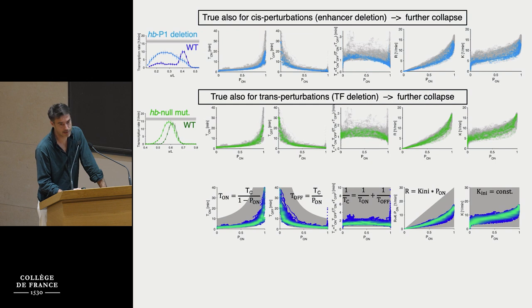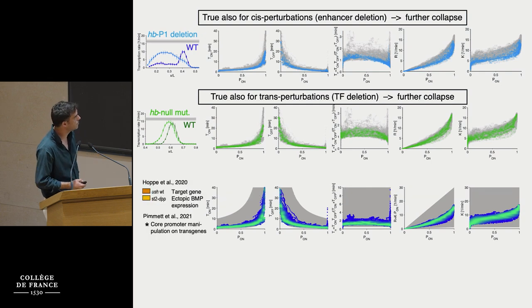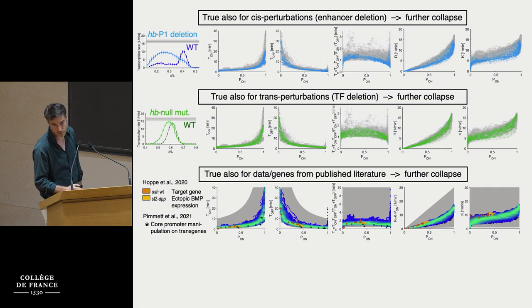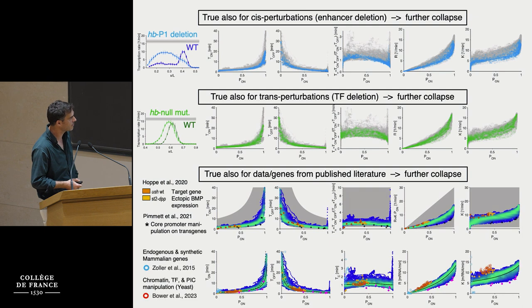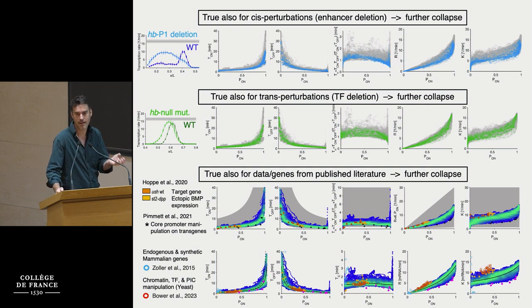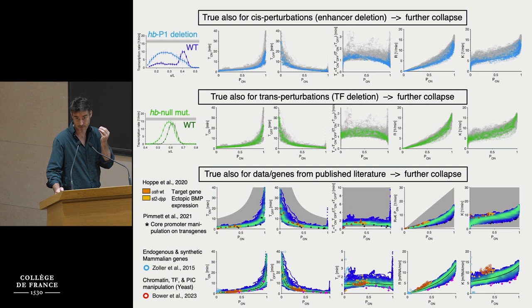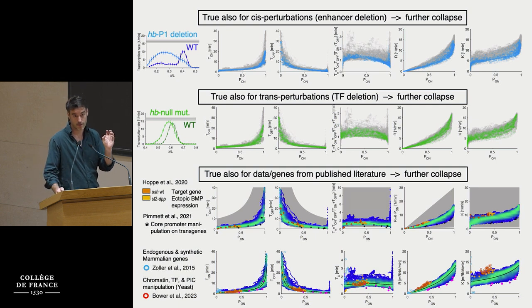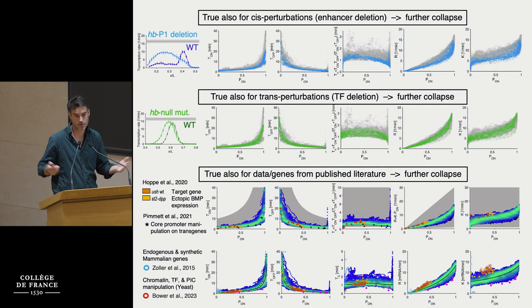Then we became more ambitious and looked at the literature — other labs that extracted similar bursting parameters in different systems. Two papers did this in the fly, and their data also collapses onto our relationships. We also looked at yeast and mammalian systems; their data collapses too. Something extremely regular underlies transcription, holding across space, time, different genes, perturbations, and apparently different species. Two conserved quantities emerge: a switching correlation time of order one to two minutes, and a conserved initiation rate of order three to five minutes — timescales invariant across all these conditions.